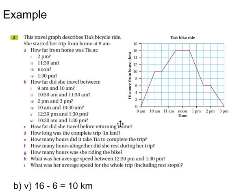B5: 12:30pm. Find noon, go to 30. So this one we're going from 16 all the way down to 1:30pm which is at 6. So 16 minus 6 is 10km.